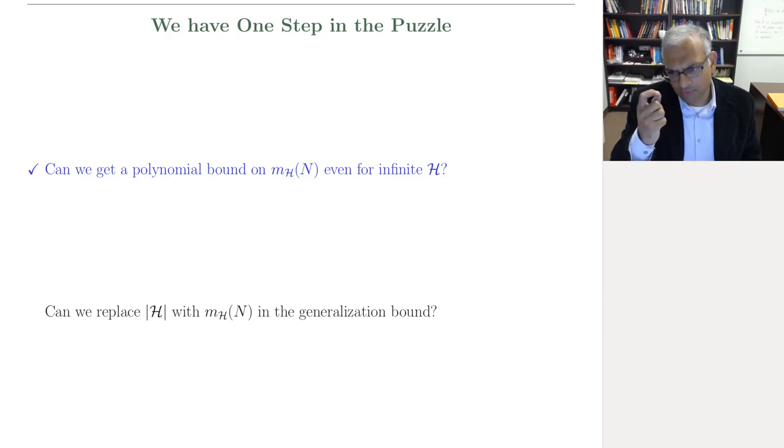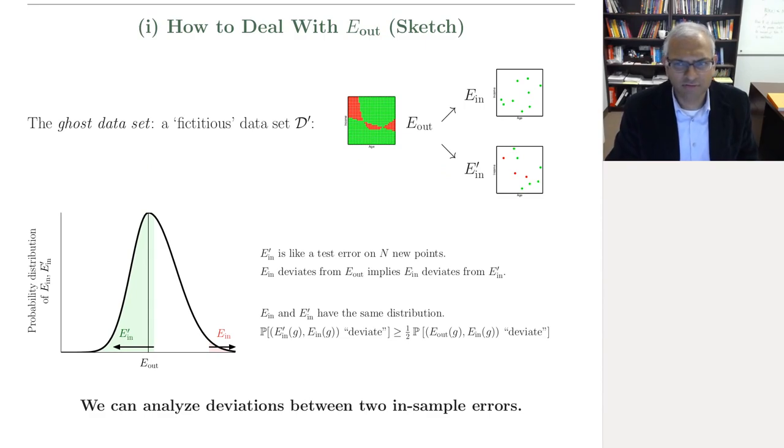So the challenge here is to link to E_out. I'm not going to give you all the details, you can see all the details in the text and the rigorous proof of the final bound that I'm going to show you. I'll just sketch the very high level ideas. So the first challenge is to link to E_out. Now you have E_out for g and E_in for g.